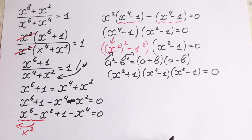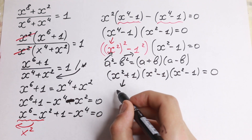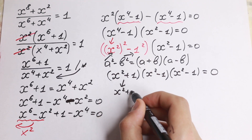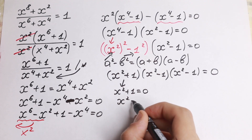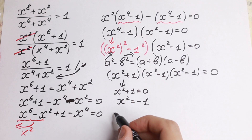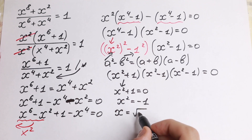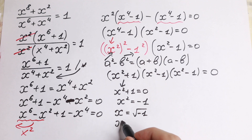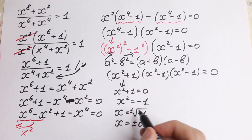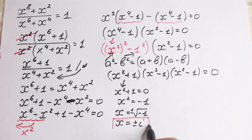Right now we have factored these expressions. We can see that x² plus one equal to zero gives x² equal to minus one. Taking the square root on both sides, x equals the square root of minus one, which gives us x equal to plus or minus i. So the first pair of solutions are complex: x equal to plus or minus i.